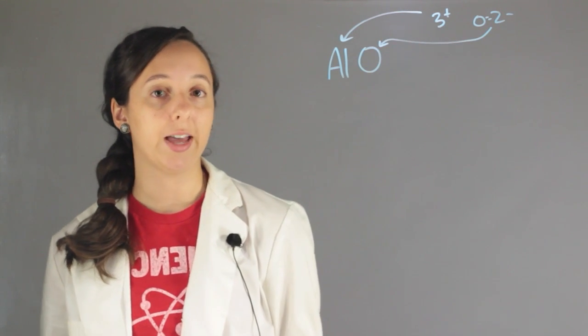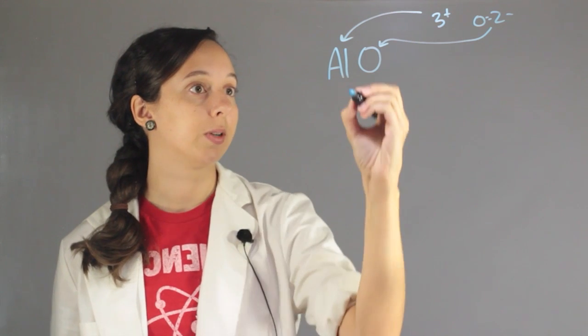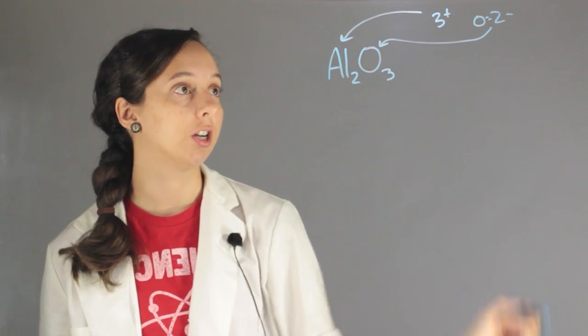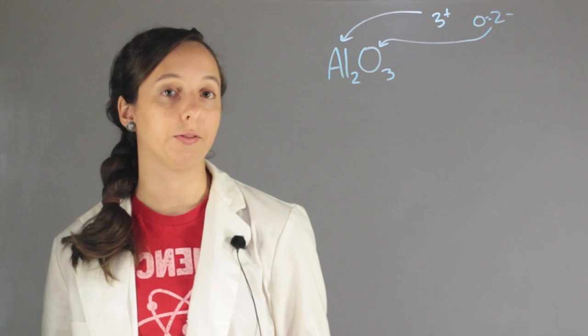So, to get these to balance out, to create something that's neutral, we're going to have to have two aluminums and three oxygens. So we have a total charge of positive six and negative six, and this is our formula for aluminum oxide.